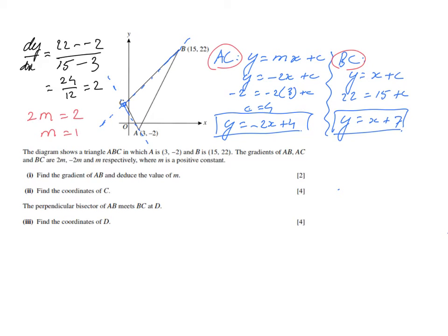Those are the equations of BC and AC. And where they meet is point C. So I'm going to equal them to each other. Minus 2X plus 4 equals X plus 7. If I rearrange that, 3X 4 minus 7 is minus 3. So X will be a minus 1. So the X coordinate of point C is minus 1. Which makes sense because it is negative indeed. And how can I find the Y coordinate? Well, you substitute it in one of the two equations. Doesn't matter which one. Let's do this one. So Y equals X plus 7. So Y equals minus 1 plus 7. Which is going to give you 6. So that is the answer to part II. Fantastic.